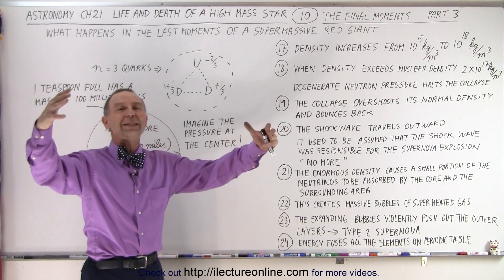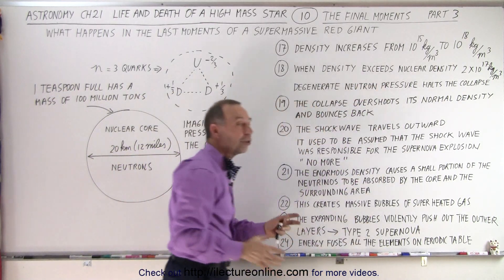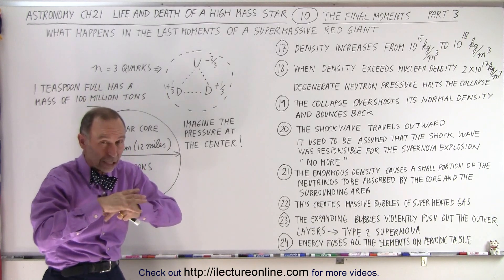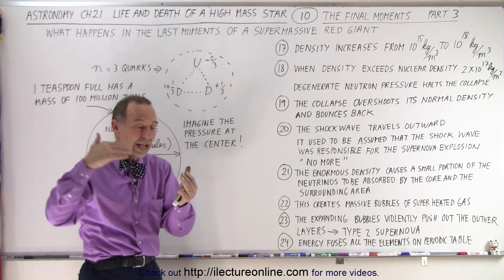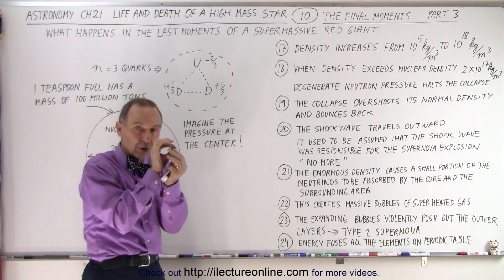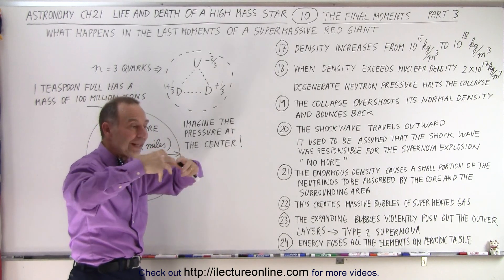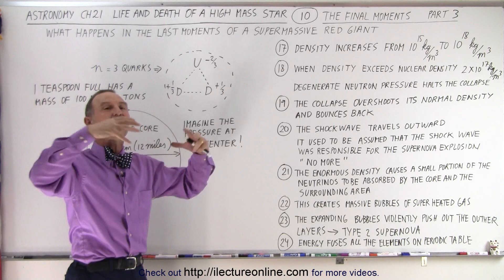So many neutrinos were formed. Not all of them were able to get out of the star because at this point the density was so enormous that not every neutrino was able to get out. A small percentage of them, which was still an enormous quantity of neutrinos, would interact with the matter, would actually bounce into the nuclei, the nucleus material. And therefore, they would get absorbed.